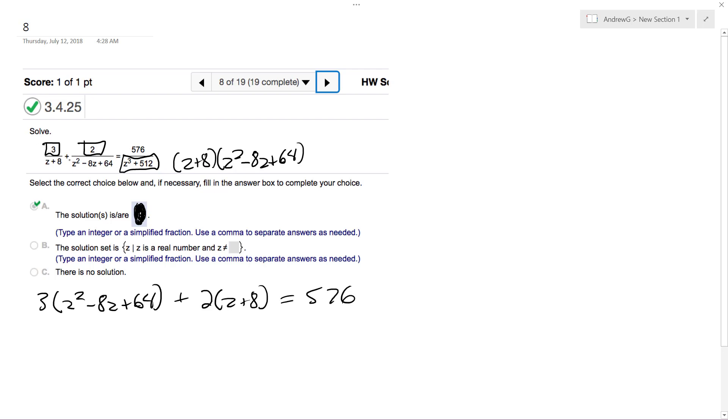And you can actually drop the denominators because everything on the left side is over z cubed plus 512, and then 576 over z cubed plus 512.